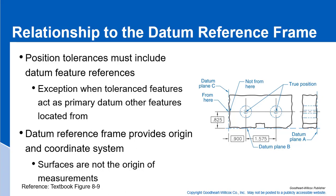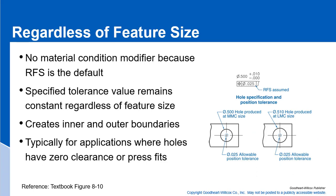We'll have a slide later that talks about the advantages of positional tolerances over coordinate tolerances. Regarding regardless of feature size — when no material condition modifier is shown, regardless of feature size is the default. The specified tolerance value remains constant regardless of feature size. When using the MMC modifier you pick up bonus tolerances as you deviate from MMC, but with RFS you don't pick up any extra tolerance.